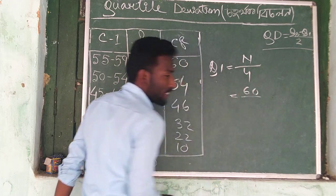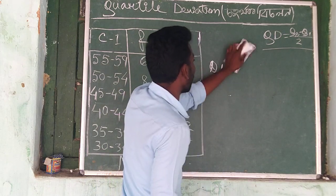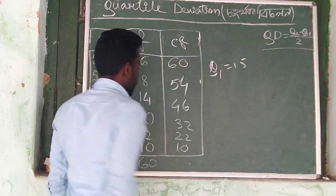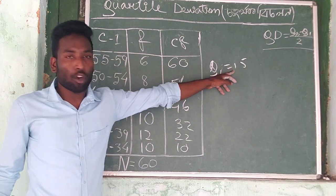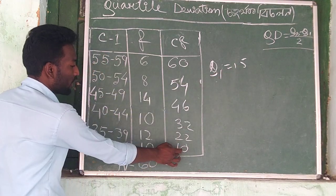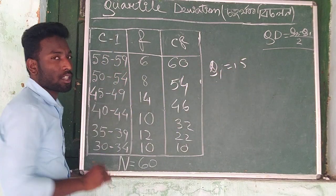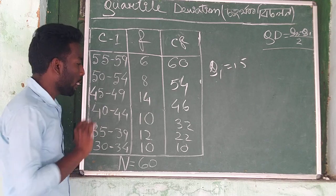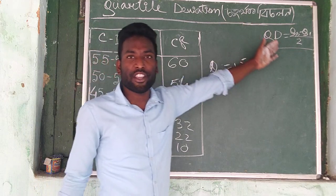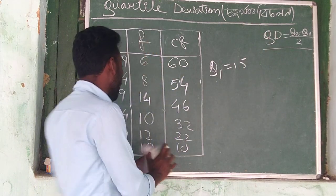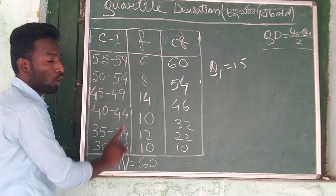So if we get n equal to 60, this is 60 by 4, which equals 15. So if we add Q1, it means 15. This quarter is 15. So we look at the cumulative frequency column — we need the value 15 in this column. This is Q1.